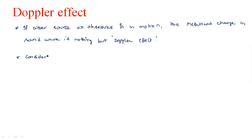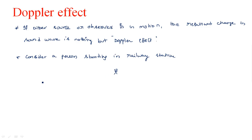Consider a person standing in a railway station. One person is stable, standing at the railway station. One train is approaching the station and then going away from the station. Take the train as the source of the sound wave, and the person who is standing is the observer.